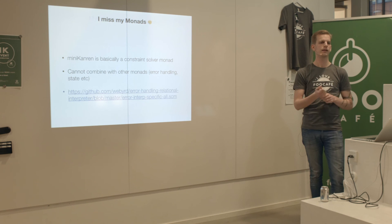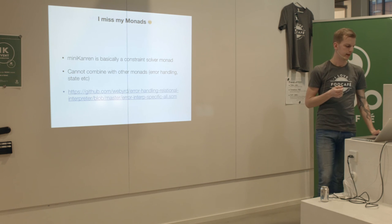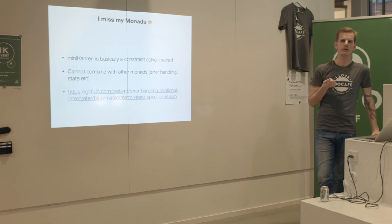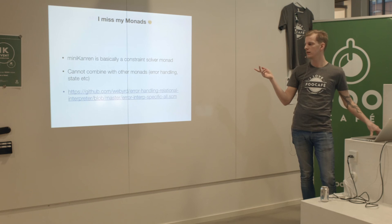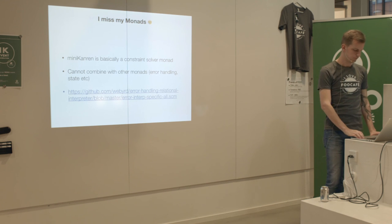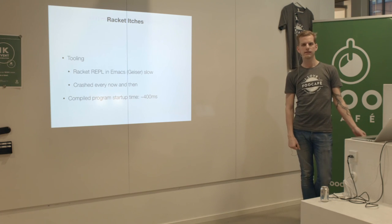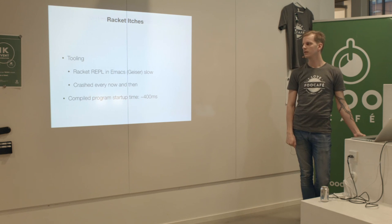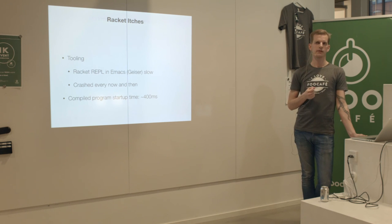You can kind of mix in error handling in MiniKanren - just go way out and report the error back at the top. If you want error handling you have to do it yourself - unify the errors and check them everywhere. Racket also had some itches: it crashed a lot in Emacs, the program took about 400 milliseconds to start. So what does one do? You rewrite the compiler in Haskell.